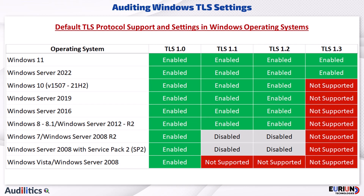For effective security, we need to disable the early TLS versions and leave only the recent and secure versions enabled, so the OS and applications will be forced to use the secure versions if they support it.